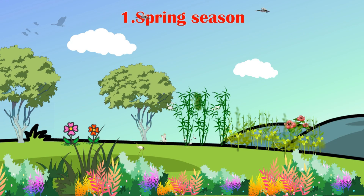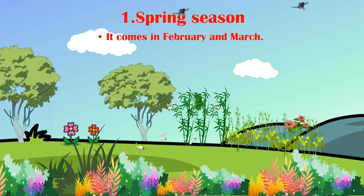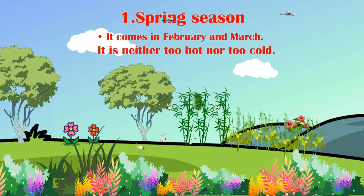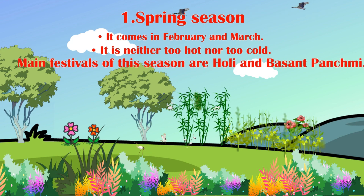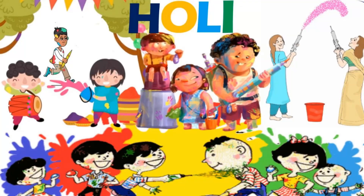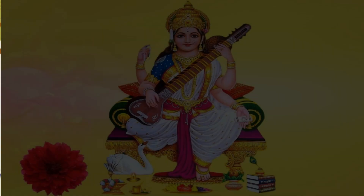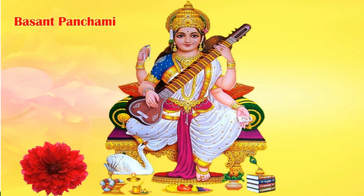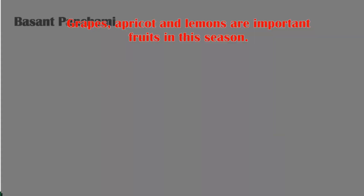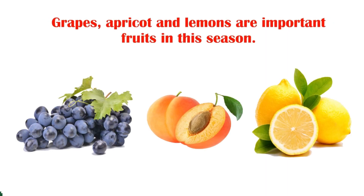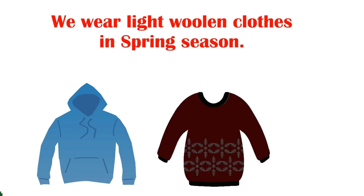Spring Season: it comes in February and March. It is neither too hot nor too cold. Main festivals of this season are Holi and Basant Panchami. Grapes, apricot, and lemons are important fruits in this season. We wear light woolen clothes in spring season.